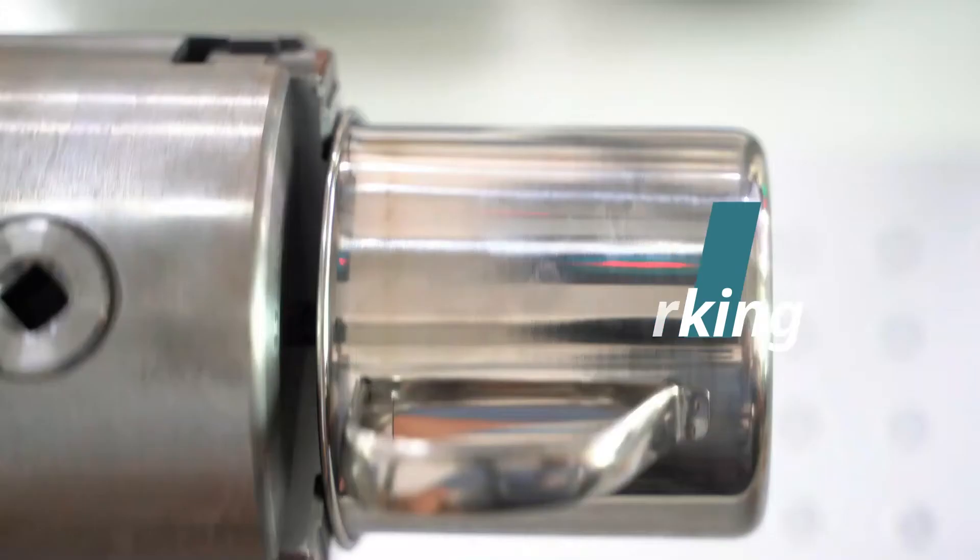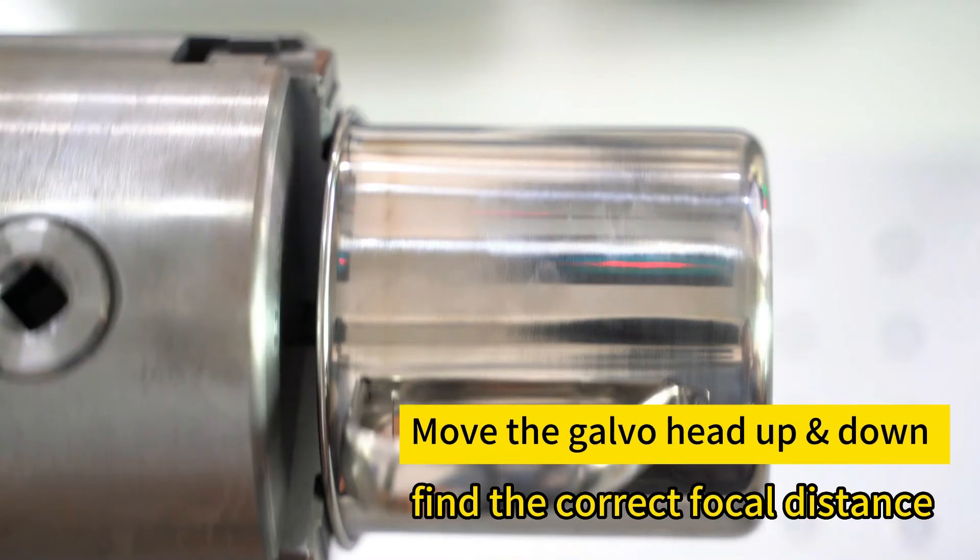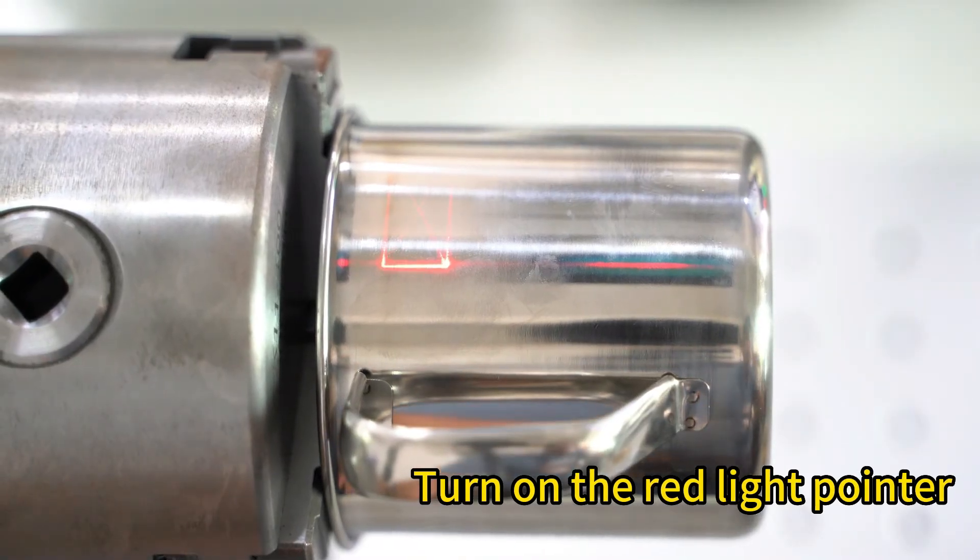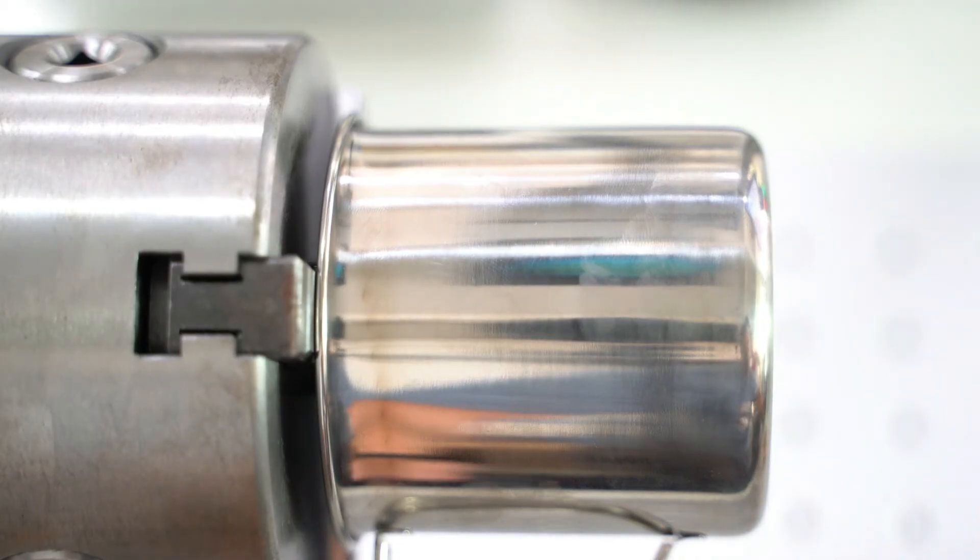After the rotary attachment is settled, we can move the galvo head up and down to find the correct focal distance. As suggested, the focal length will be different if the equipped field mirror is different. Turn on the red light pointer, which can show you the engraving area. Press the F1 button and start the marking.